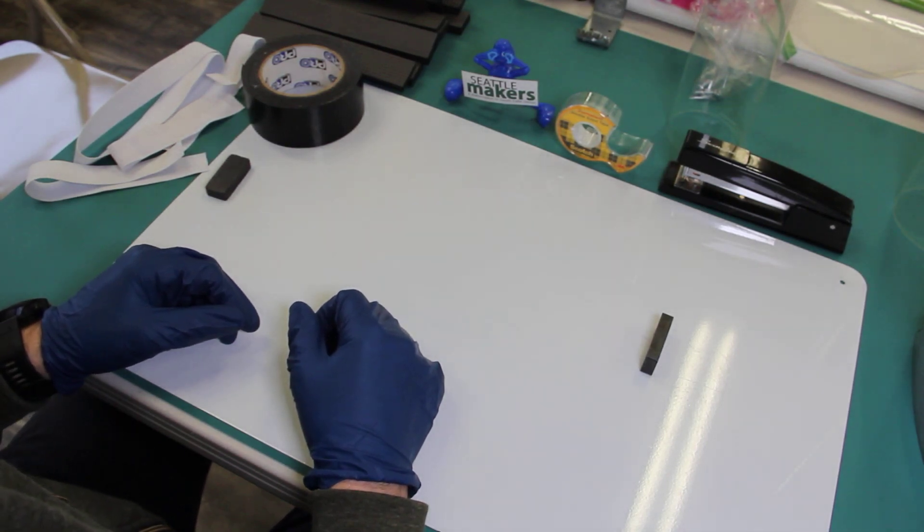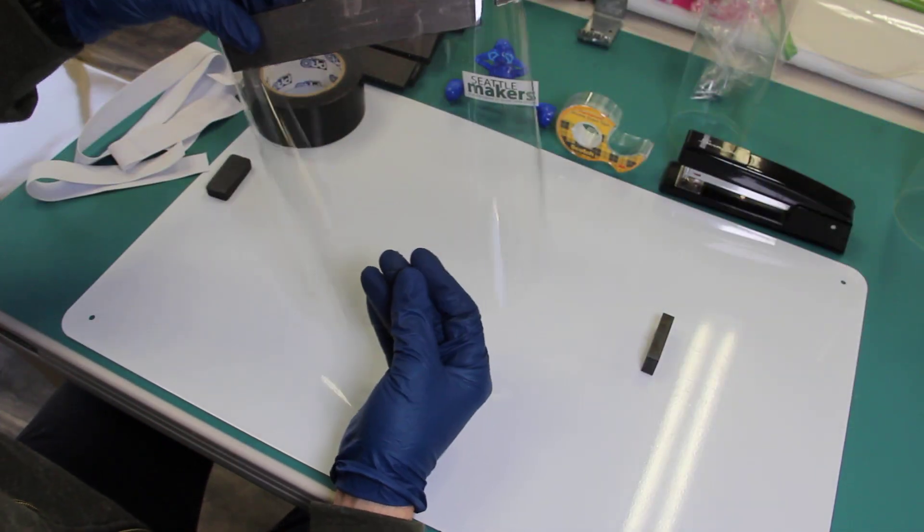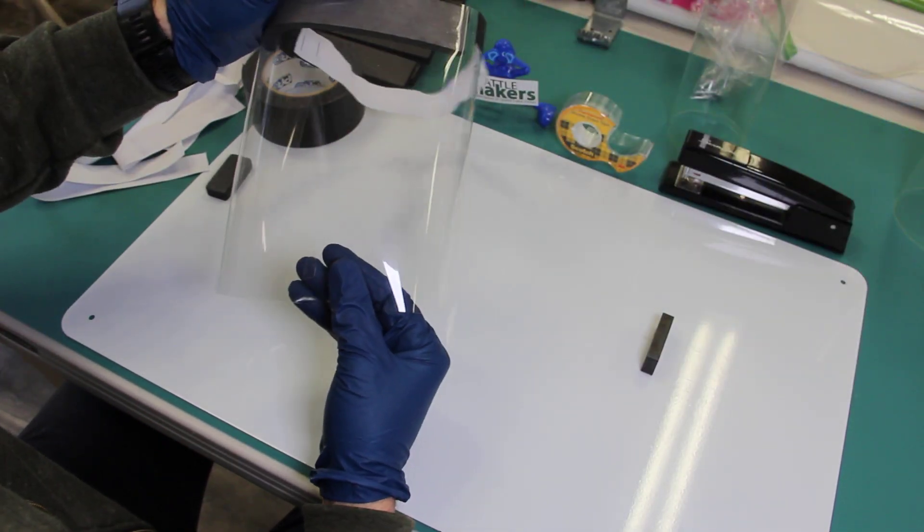Hi, my name is Jeremy Hansen, co-founder of Seattle Makers, and today I'm going to show you how to assemble one of our laser-cut face shields.